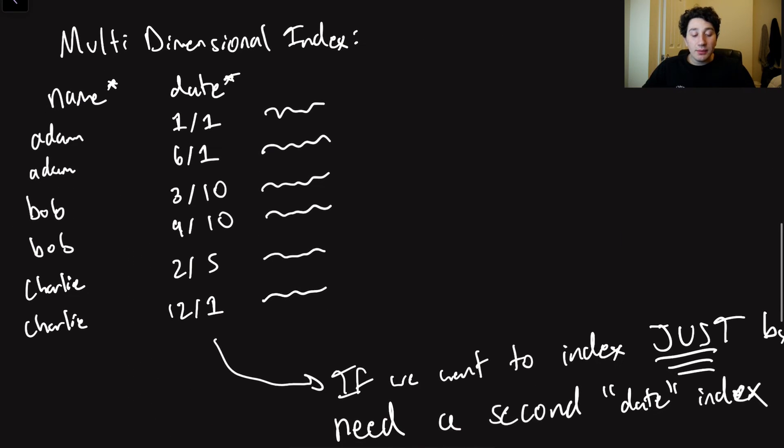So the last thing that I plan on covering in this video is the concept of a multi-dimensional index. So we've covered what an index on a single field is, but a lot of the times what you'll want is kind of a combo index where not only do we have an index on one field, but within that sorted order, we also want basically an internal sorted order. We don't just want it to be random.